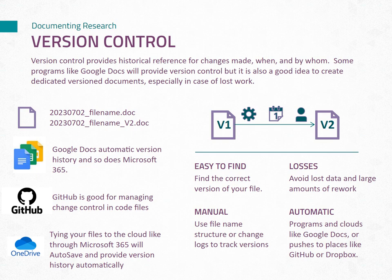Version control is a crucial aspect of file management, providing a historical reference for changes made, their timing, and the individuals responsible. Whether utilizing program-specific version control features or creating dedicated version documents, implementing version control safeguards your work, facilitates quick retrieval of specific file versions, and minimizes data loss and rework. Manual version control allows you to track file versions using file naming conventions or change logs. By structuring your file names to include version numbers or utilizing a separate log to record changes, you can easily identify and differentiate between different iterations of your files. Manual version control is a flexible approach that can be adapted to various file types and management systems, providing a clear history of modifications made.